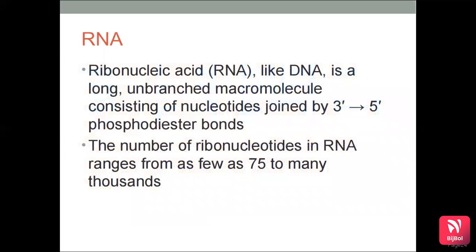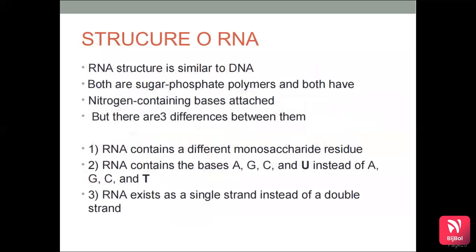RNA, or ribonucleic acid, is a long unbranched macromolecule consisting of nucleotides joined by 3' to 5' phosphodiester bonds. The number of ribonucleotides in RNA ranges from as few as 75 to many thousands. RNA structure is similar to DNA — both contain sugar-phosphate polymers and nitrogen-containing bases — but RNA contains a different monosaccharide residue and uses the bases A, G, C and U instead of A, G, C and T.